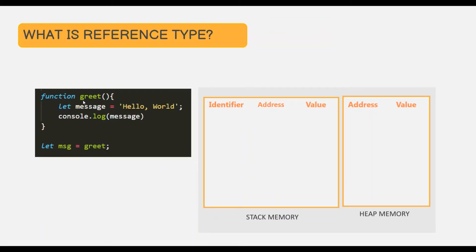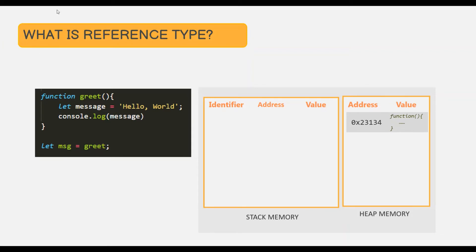In this example, we have the greet function. Then we are assigning this greet function to a message variable. Remember that while assigning a function to a variable, we don't use parentheses. When the JavaScript engine scans this code, this function will be stored in the heap memory. Because a function is just like an object, and since it is an object, it is a reference type. Reference types are stored in heap memory. So this function definition will be stored somewhere in heap memory. The name greet will act as an identifier, storing a reference to the memory address where that function definition is stored.